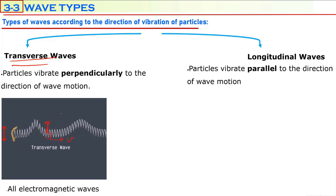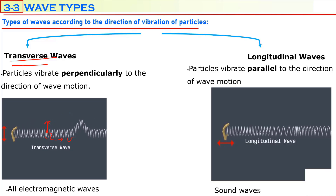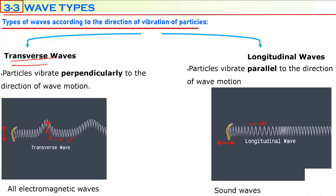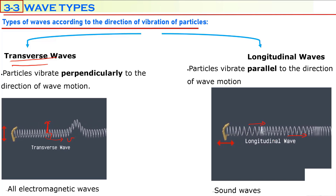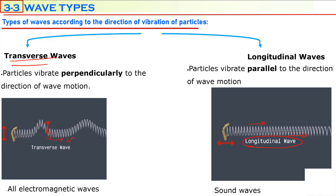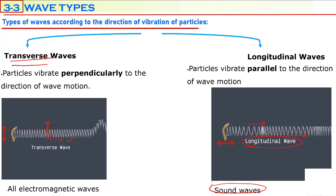Some waves have particles which vibrate parallel to the direction of motion. In this case, the vibration is horizontal and the wave motion is also horizontal. These types of waves are called longitudinal waves. The best example is sound waves.